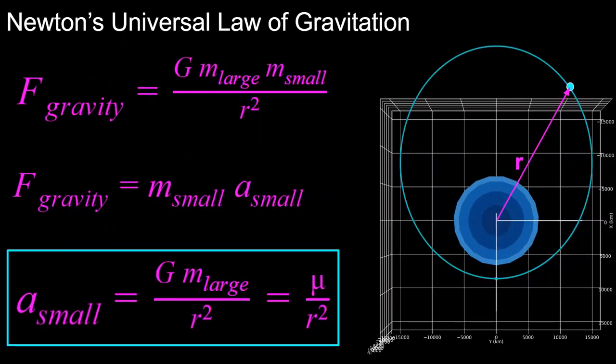Once we have all these assumptions, we arrive at Newton's universal law of gravitation, which states that the force due to gravity on the small body is equal to the mass of the large body times the mass of the small body times the gravitational constant in our universe divided by the distance between them squared. Now note that this r is the distance between the geometric center of the large body and the small body, not the surface of the large body.